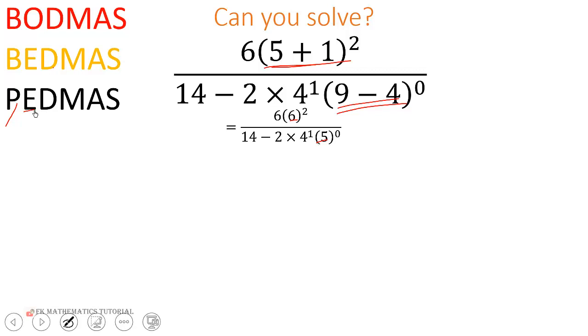Now we deal with the exponents. 6 squared is 36, and 5 to the exponent 0 is 1. The next thing we do is to deal with division and multiplication.